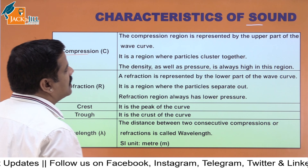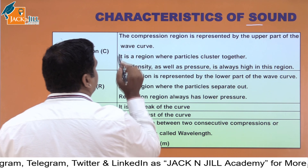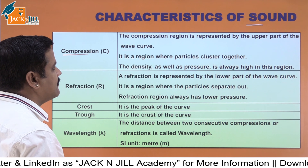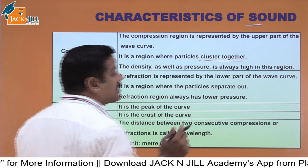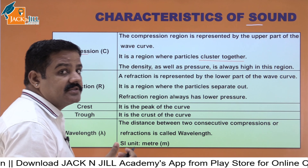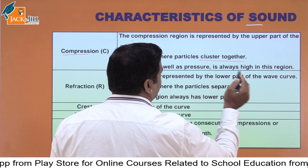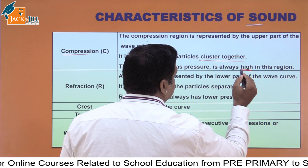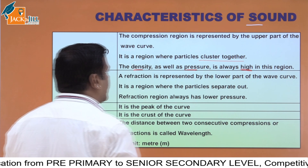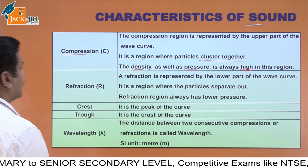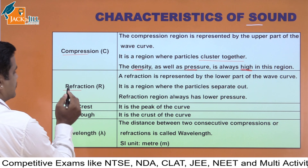We have already seen what compression is. The compression region is represented by the upper part of the wave curve. It is a region where particles cluster together — density increases. The density as well as pressure is always high in this region — density and pressure are high in compression.